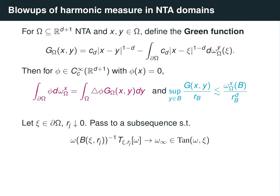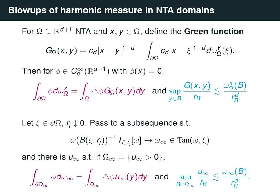Now, suppose we have a point psi on the boundary and some sequence of radii going to zero. Since harmonic measure is doubling, we can pass to a subsequence so that the blowups of harmonic measure — renormalized by dividing by the measures of the balls in which we're blowing up — converge to some tangent measure, which we denote omega_infinity. By also scaling and composing Green's function with the inverse of these blowup maps, we obtain blown-up versions of Green's functions. Since Green's function is uniformly Hölder along the boundary, these blowups form an equicontinuous family on compact sets, so we can pass to a subsequence converging uniformly on all compact subsets of Euclidean space to some function u_infinity.